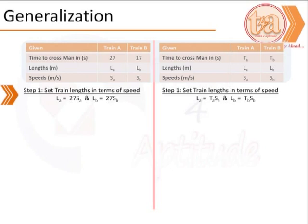Given that the answer is SA/SB, we would attempt to represent the lengths of the trains LA and LB in terms of the speeds of the trains, that is SA and SB.